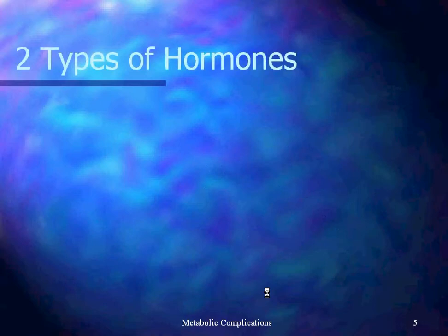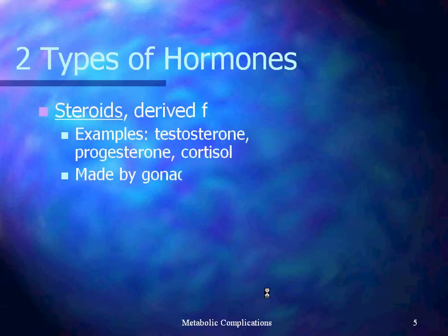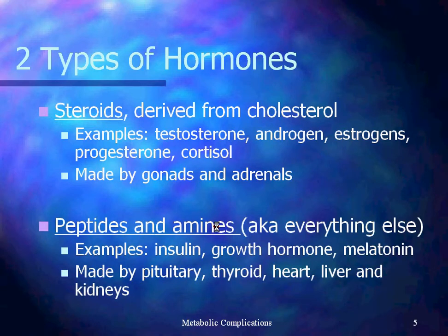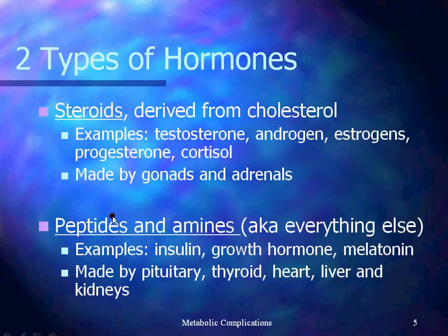There are two main categories of hormones. Steroid hormones are derived from cholesterol — examples include testosterone, androgen, estrogens, progesterone, and cortisol. These are made by the gonads and by the adrenal glands. Then there are peptides and amines, essentially everything else. Examples of that are insulin, growth hormone, and melatonin. These are made by the other places in the endocrine system: the pituitary gland, thyroid, heart, liver, and kidneys.